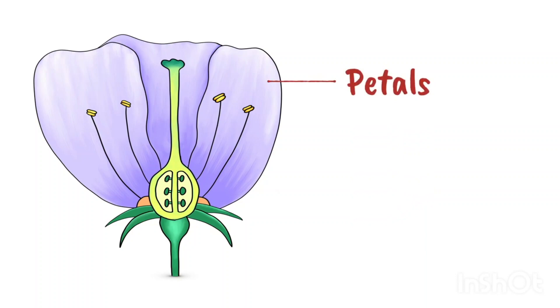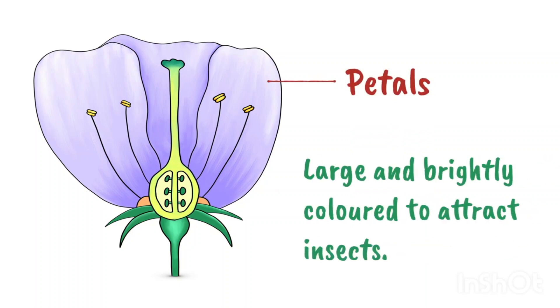Let's start with the petals. These are large and often brightly colored to attract insects.